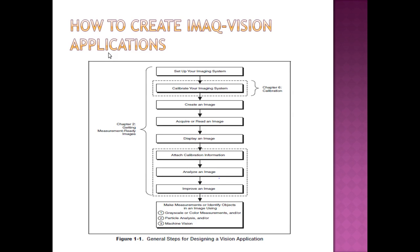This block diagram illustrates how to create image acquisition vision applications. The first step is to set up the image system and calibrate it. Then create an image, acquire or read an image, display the image, and attach calibration information. After attaching the information, analyze the image — there may be noise associated with the image, so we need to improve it. There are three factors by which we can improve the image: grayscale or color measurements, particle analysis, and machine vision.